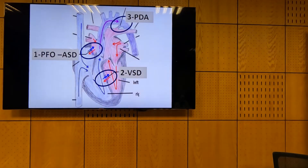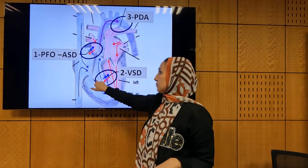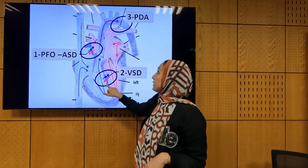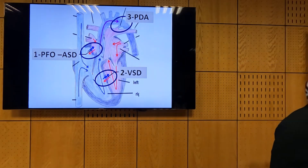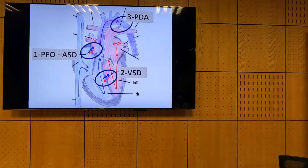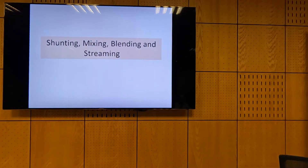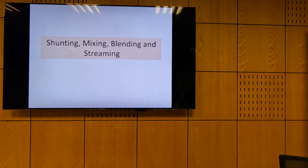The sites where blood crosses between both circulations can be intra-atrial — either PFO or ASD — or between the ventricles via VSD, or via the PDA. These are the three sites where blood can cross. Here comes an important part of TGA physiology. We have the terminology: shunting, mixing, blending, and streaming.